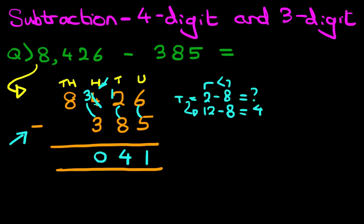And lastly, we have the thousands column. We've got 8 minus 0. 8 minus 0 is 8. 8 and we have our answer.